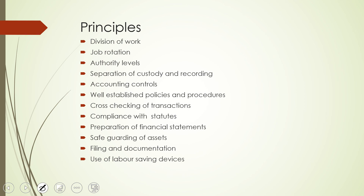Next are the principles of the internal check system, which are guidelines for establishing such a system. The first principle is division of work — no one person must be allocated to perform a task from origin to end. The activity or transaction is divided into many subdivisions, and the work is divided in a proper and rational manner among staff. This division helps in specialization and attaining efficiency and speed of work.